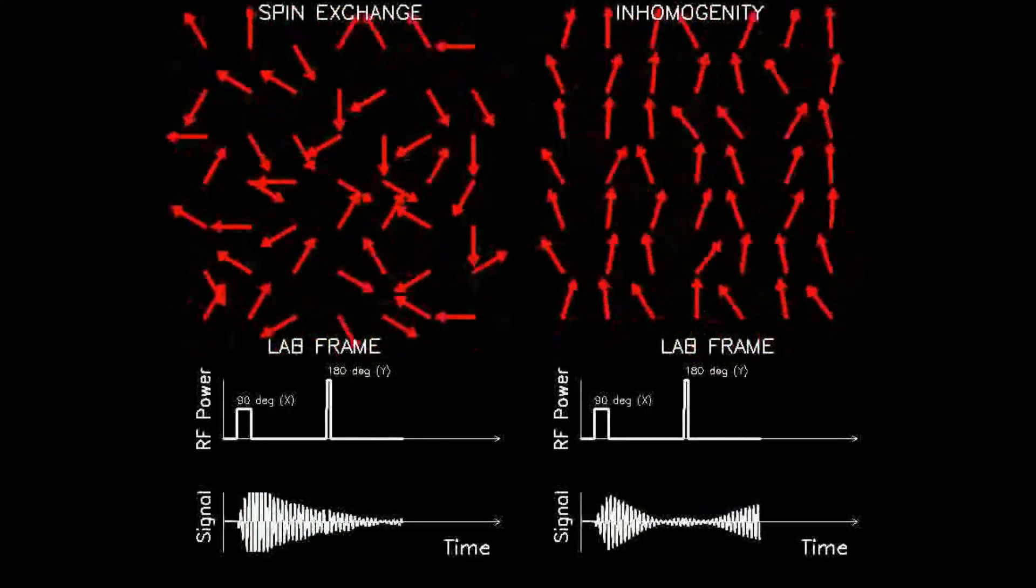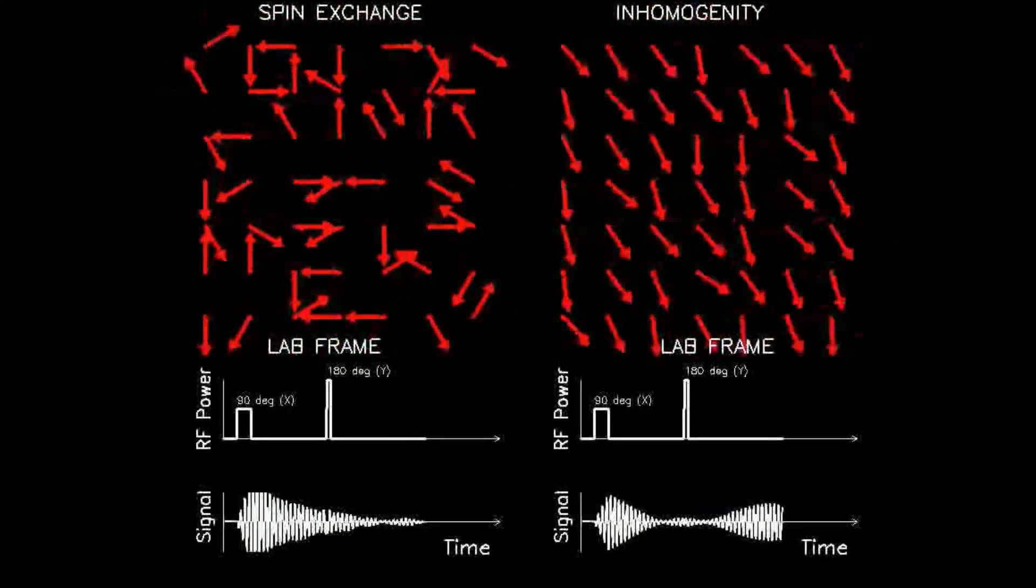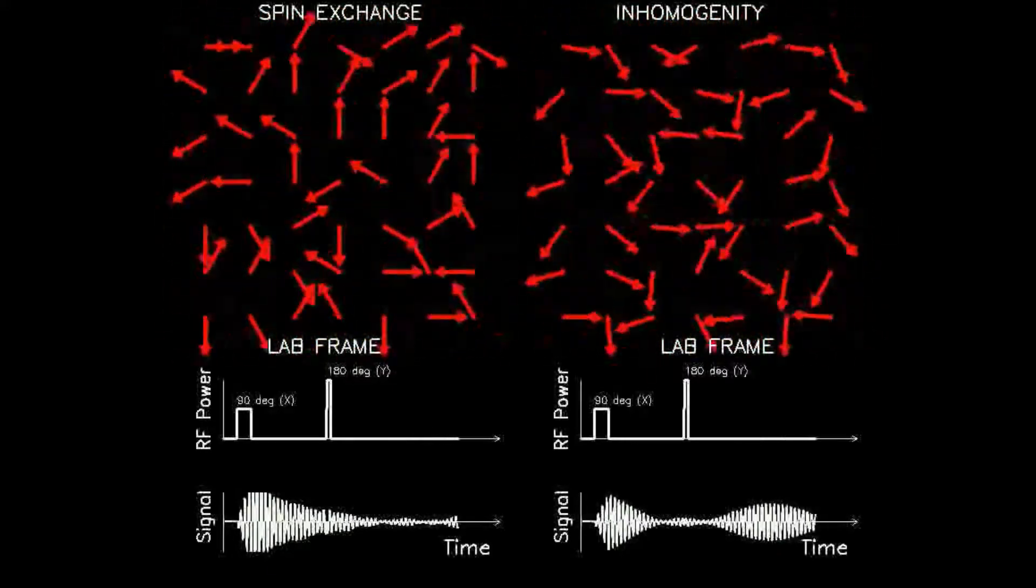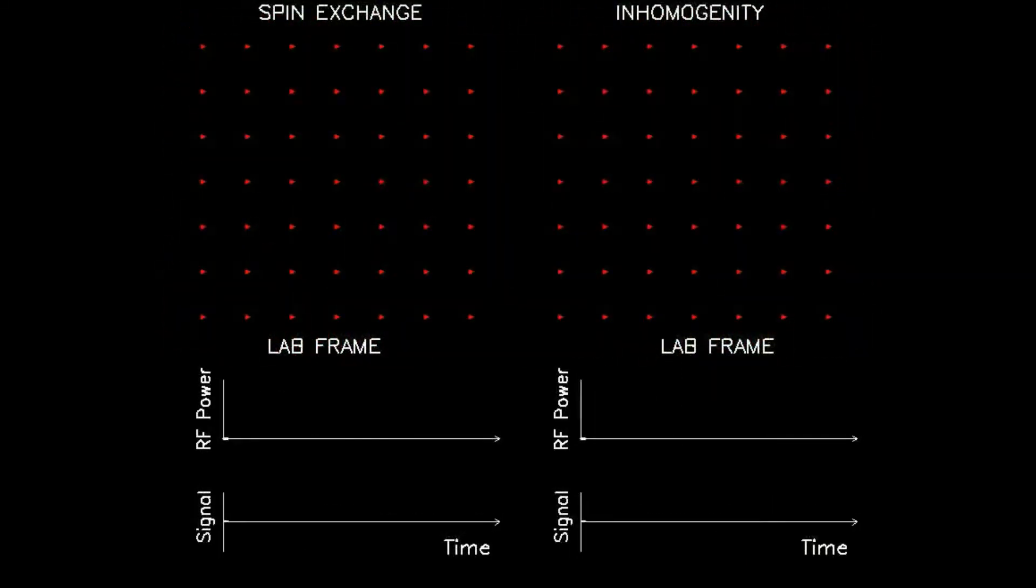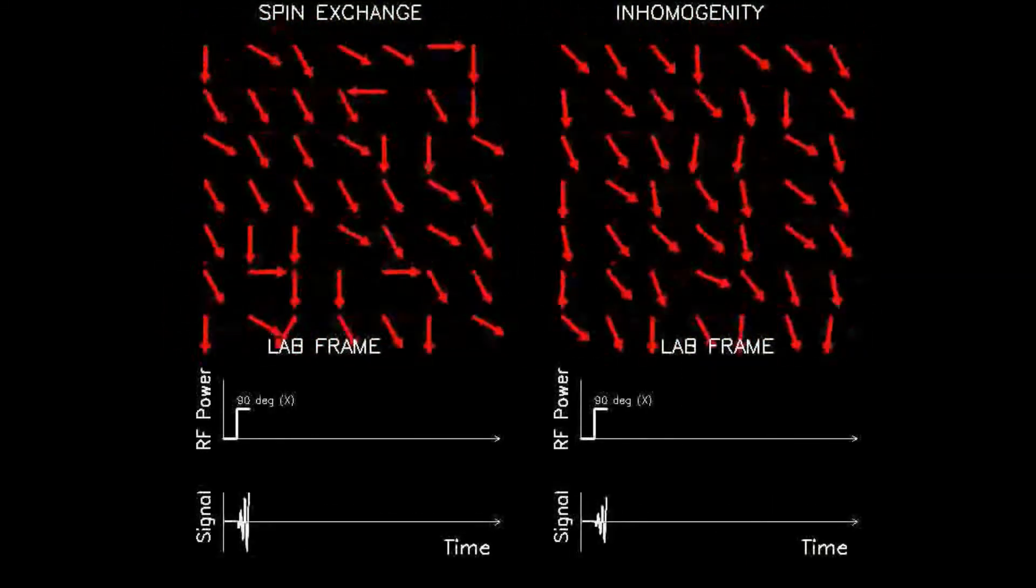This animation illustrates the process of creating a signal using spin echo. The top two panels again show an array of 7x7 dipoles in the laboratory frame, as viewed down along the main magnetic axis.